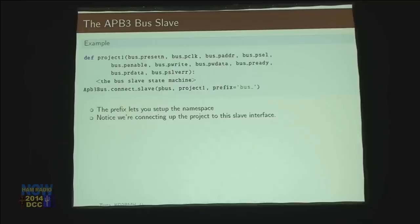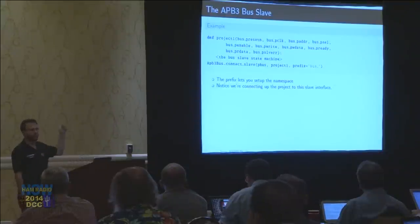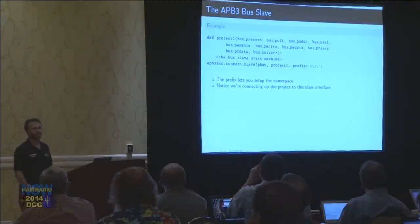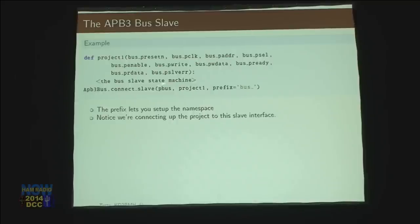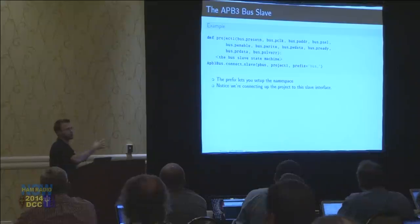The slave error signal can represent: if you try to access an address in that slave that's not real, it can throw that line, and then in the real world your whole system crashes. But at least you know you were trying to access some place that doesn't really exist. Notice on the second line, we connect to this slave our project on the APB3 bus, and we pass in this prefix thing so that way we can actually have multiple slaves on the same thing.